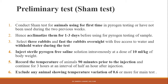Select three rabbits and fast them overnight with free access to water, and withhold water during the test as well. Inject sterile pyrogen-free saline solution intravenously at a dose of 10 ml per kg of body weight. Record the temperature 90 minutes prior to injection and continue for three hours at half-hour intervals after injection. Exclude animals showing a temperature variation of 0.6 degrees or more from the main test.